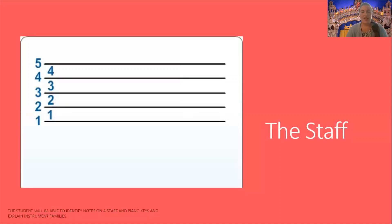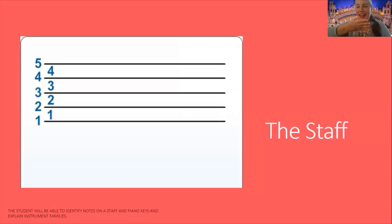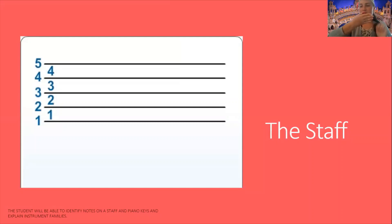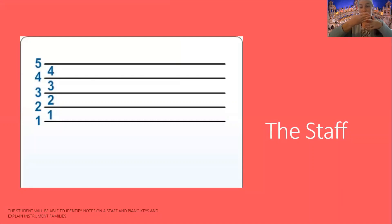So this is our musical staff and it consists of five lines and four spaces. I want everybody to take your hand — this is your magical wonderful hand staff. You have one, two, three, four, five lines, and if you go in between you've got one, two, three, four spaces. If you ever forget, just look at your hand staff and count them. Notice I count from the bottom up — that is how you count lines and spaces on a musical staff as well.